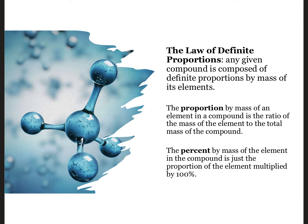Next, the law of definite proportions notes that any given compound is composed of definite proportions by mass of its constituent elements. For example, in all samples of pure water, the mass ratio of oxygen to hydrogen is 8 to 1. We can also talk about the percent by mass of an element by multiplying the proportion by 100%. Let's look at an example.